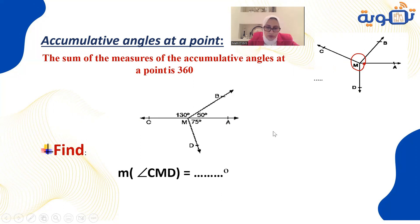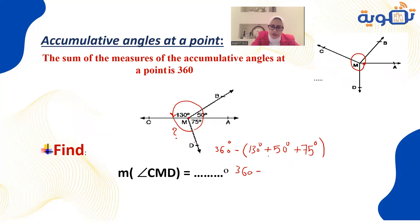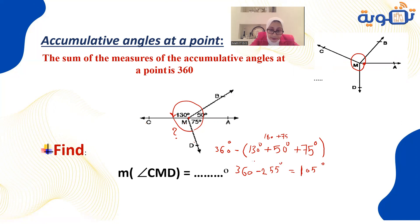To get the measurement of angle CMD: since all accumulative angles meeting at one point form a full circle, I calculate 360 minus the sum of the given angles: 360 minus (130 plus 50 plus 75). That gives 360 minus 255, which equals 105 degrees.